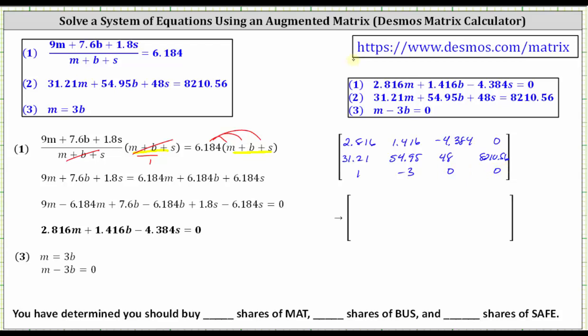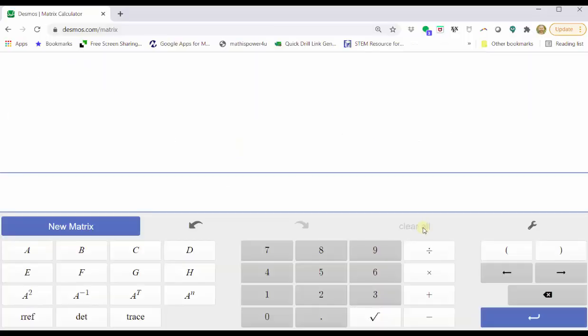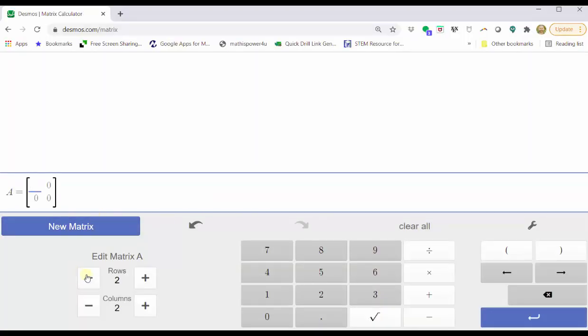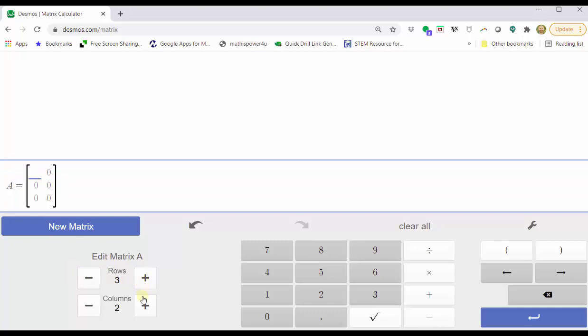Now we go to the Desmos matrix calculator and enter the augmented matrix. Click new matrix, change the dimensions to a 3 by 4 matrix, and now we enter the elements. In the first row, we have 2.816, 1.416, -4.384, zero.